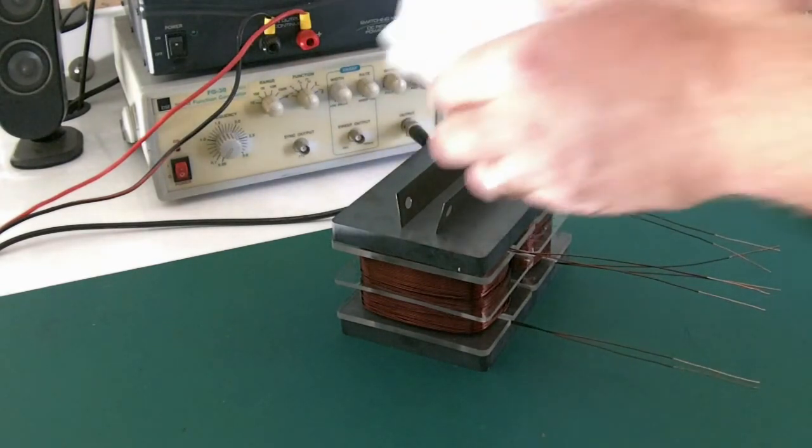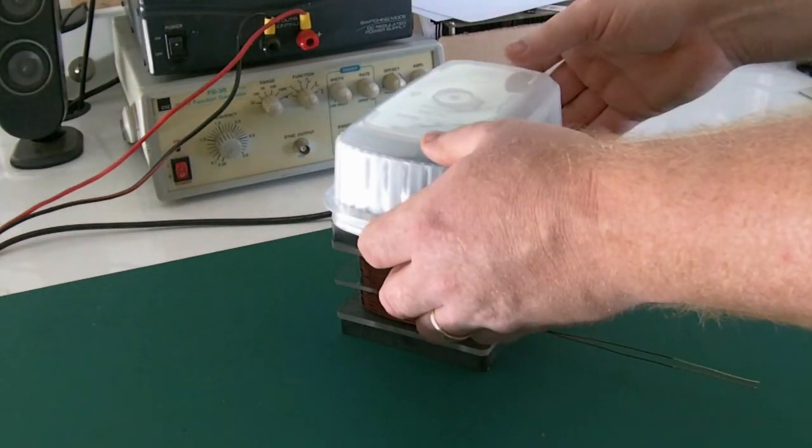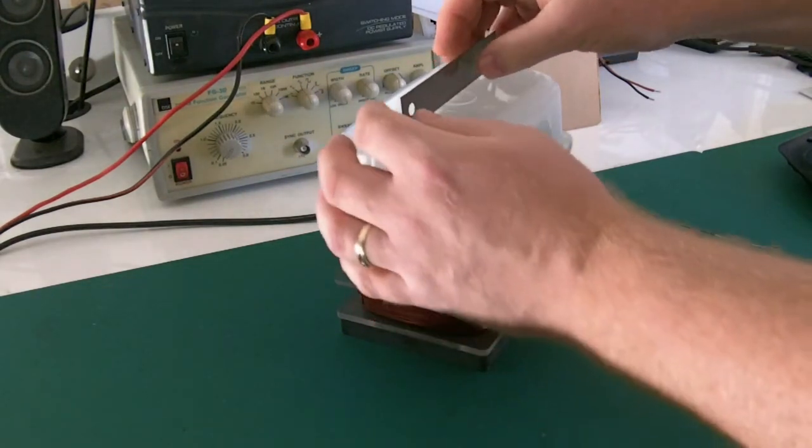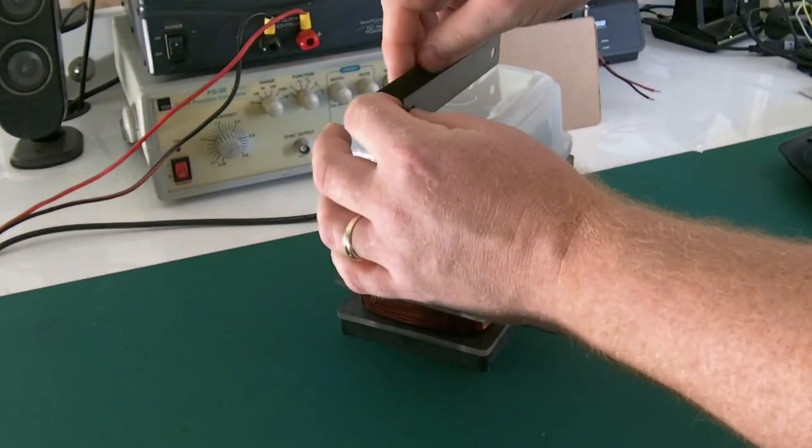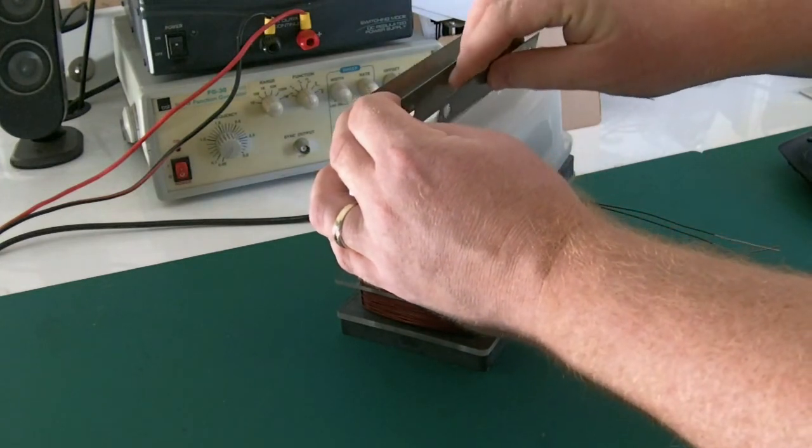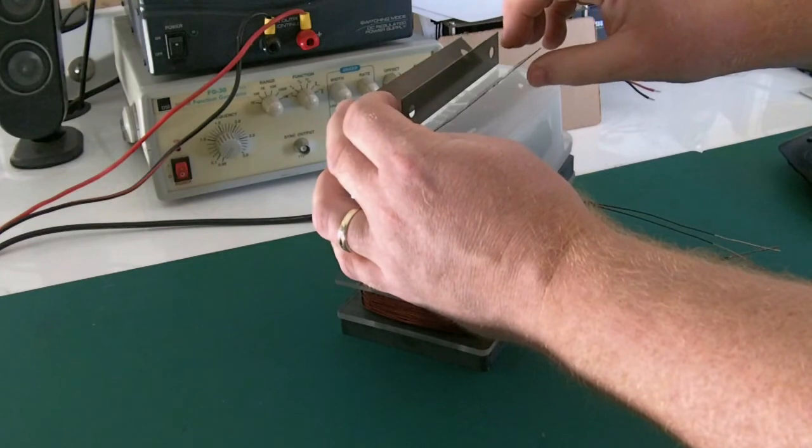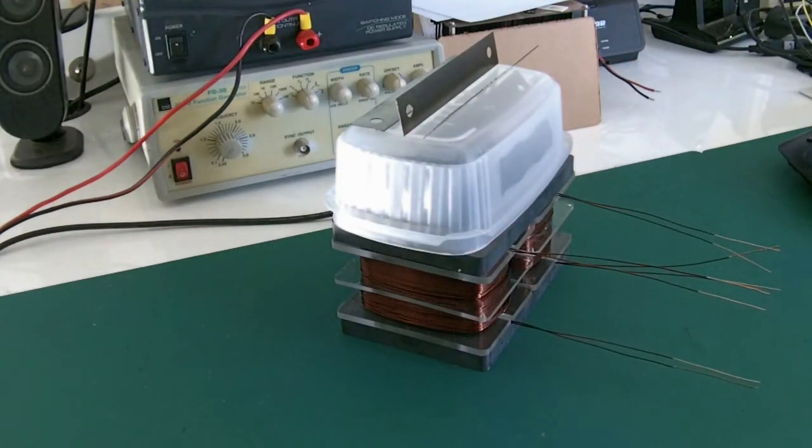Here we are using a plastic container to simulate the alloy box that Floyd was showing us. Now we add 3 laminations to the top. At this point, we can clearly see that we are having trouble standing the shim stocks or laminations up on edge. We can get 2 to stand up but not 3, as Floyd clearly showed us in his setup.